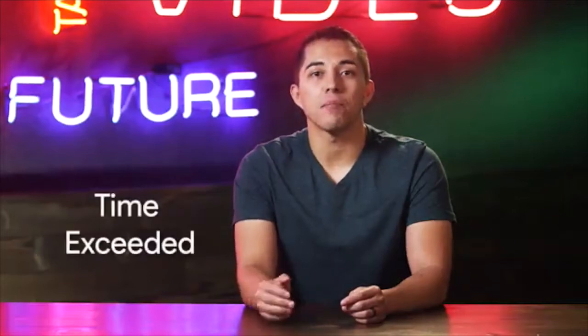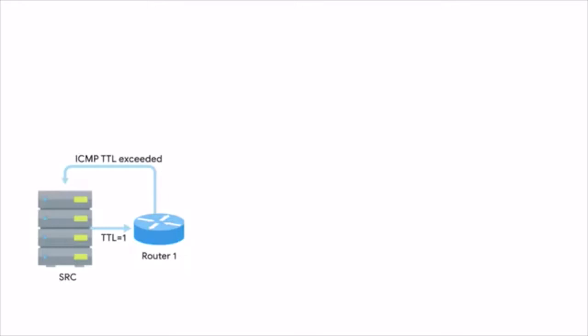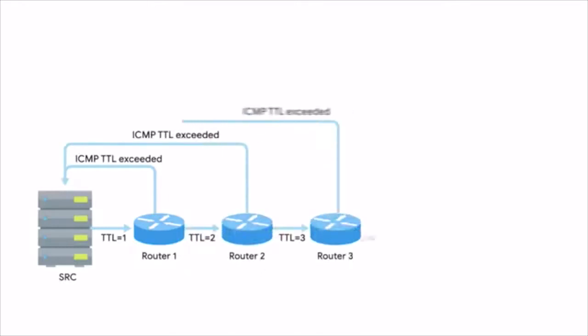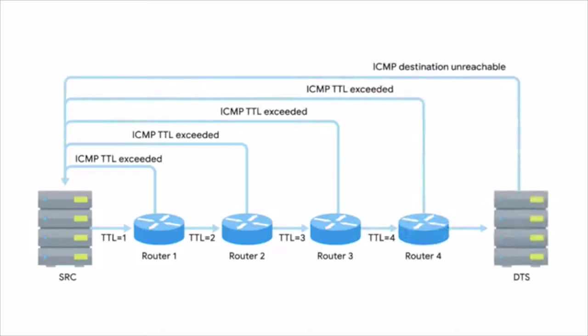The way Traceroute works is through a clever manipulation of the TTL field at the IP level. The TTL field is decremented by one by every router that forwards the packet. When the TTL field reaches zero, the packet is discarded and an ICMP time exceeded message is sent back to the originating host. Traceroute uses the TTL field by first setting it to one for the first packet, then two for the second, three for the third, and so on. This makes sure that the first packet sent will be discarded by the first router hop, resulting in an ICMP time exceeded message. This continues until the packet finally makes it all the way to its destination.